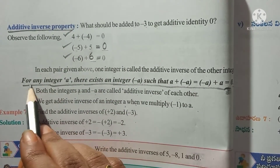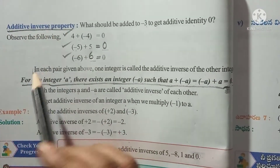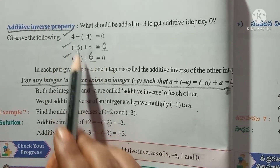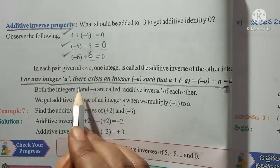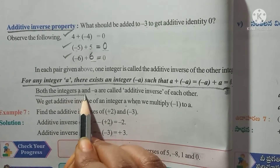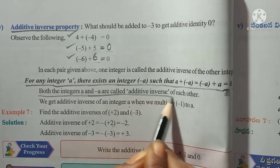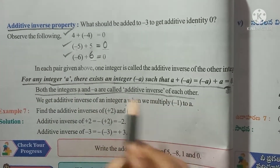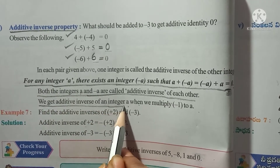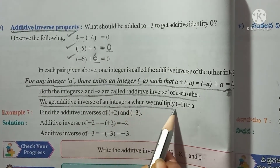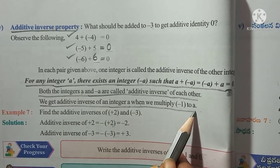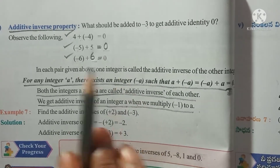In your notes, write the definition of additive inverse property. The examples are: minus 4 plus 4, minus 5 plus 5, and minus 6 plus 6. Write the definition and two key lines: both a and minus a are additive inverses of each other, and we get the additive inverse of a by multiplying minus 1 to a.